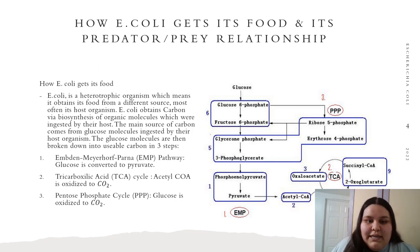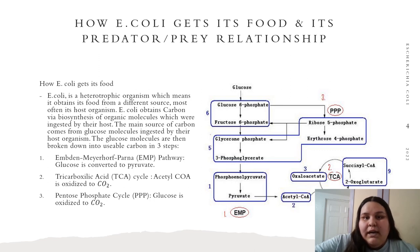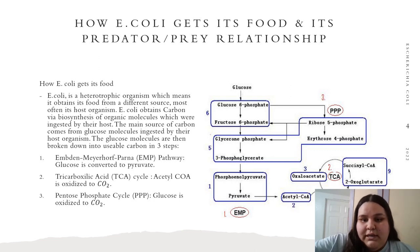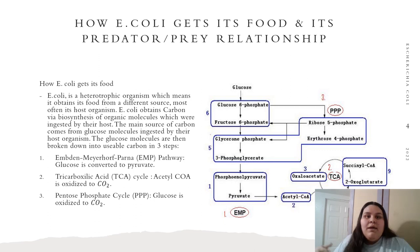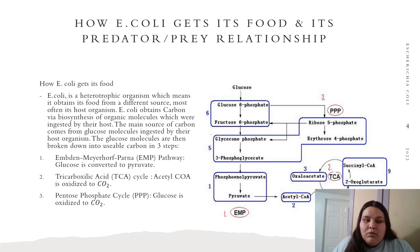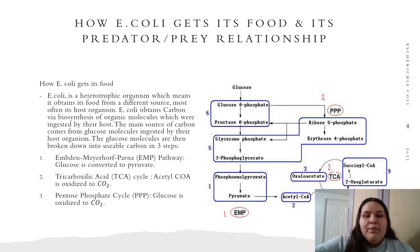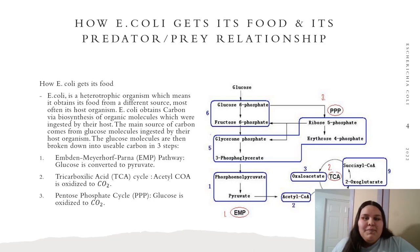In the second step, TCA, acetyl-CoA is oxidized to CO₂. If you look to the right you can see acetyl-CoA being oxidized into CO₂. Lastly, we have PPP, where glucose is oxidized into CO₂. Again, if you look on the right you can see glucose being oxidized into CO₂.